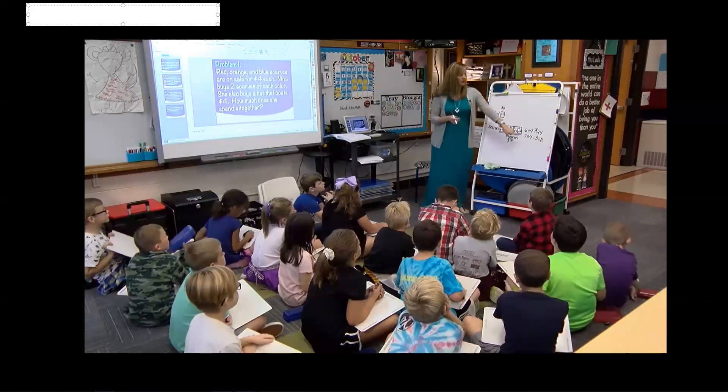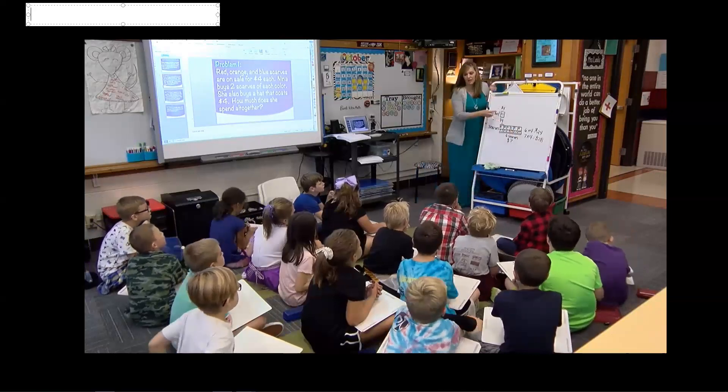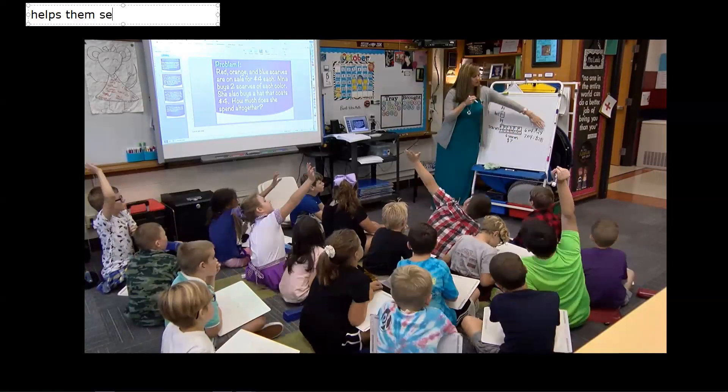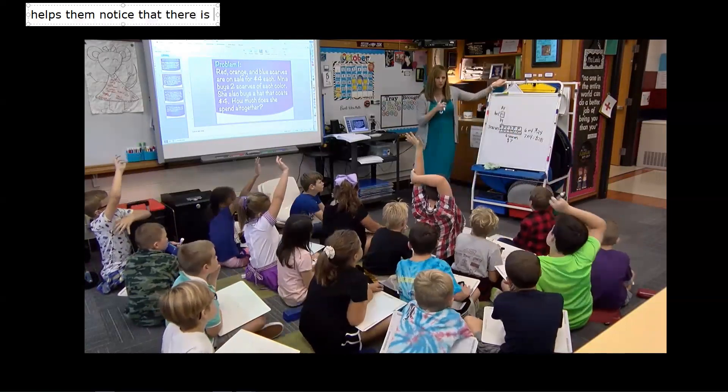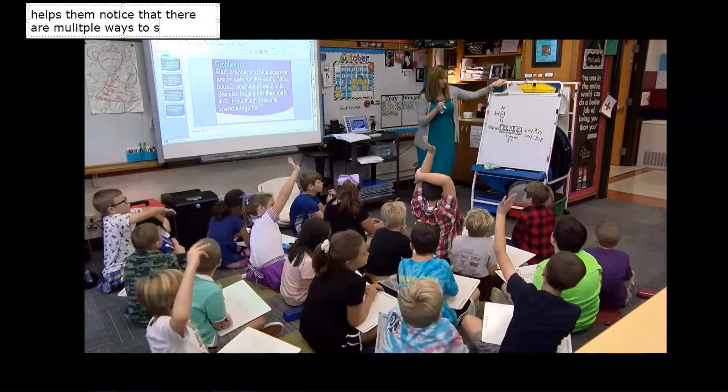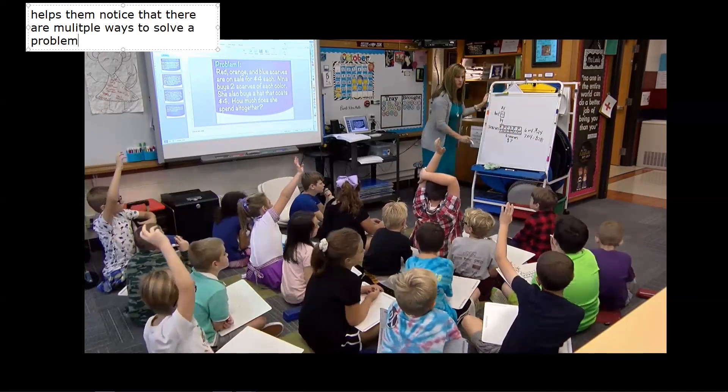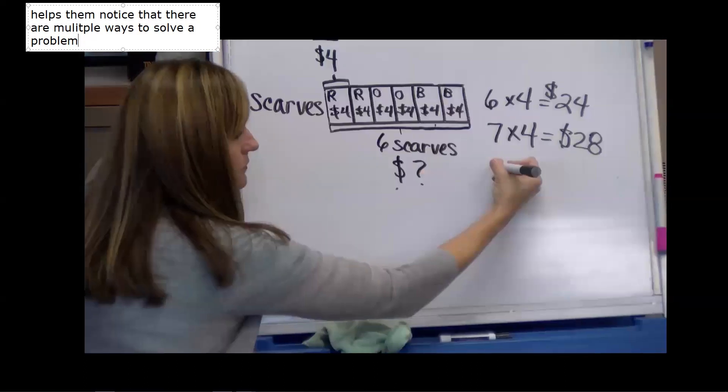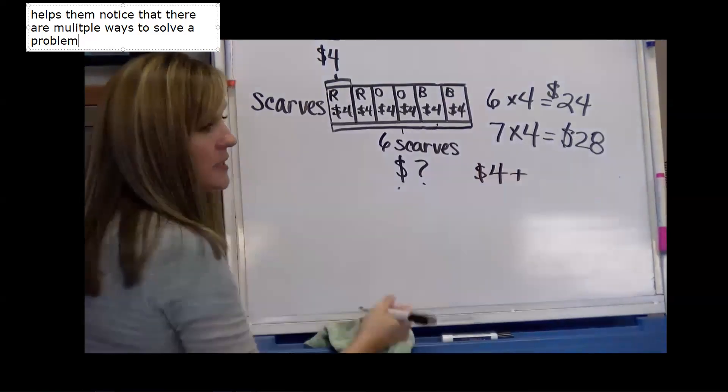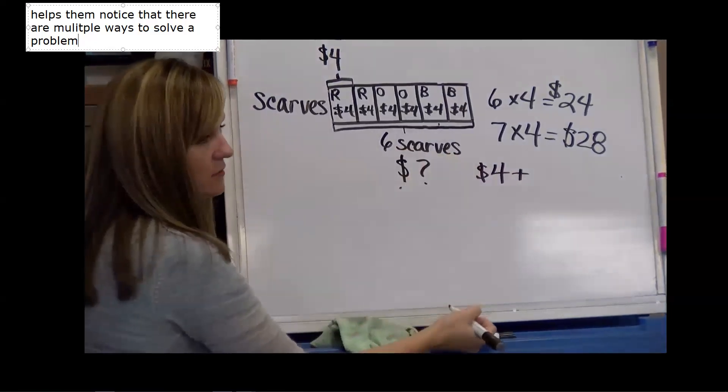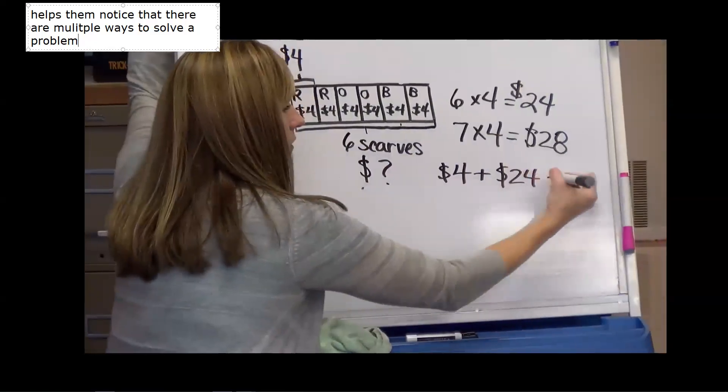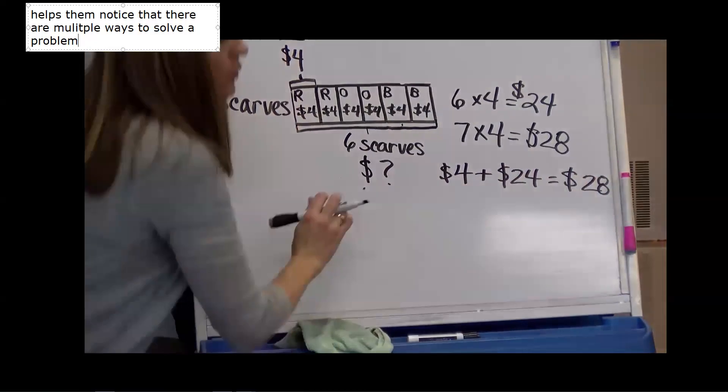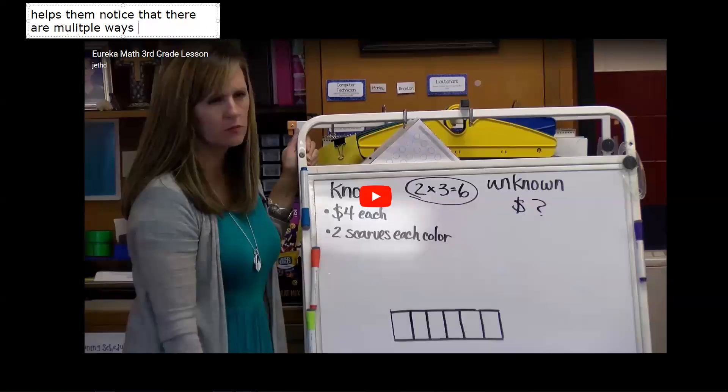Now I have to tell you, most third graders wouldn't recognize that we added another group of four. They would have seen it, but I don't think that's the way they would have solved. Can anyone think of another way we could have solved? If we know that the scarves add up to $24 and a hat costs $4 more, what else could we do, Tristan? We could just add $4 plus $4 plus what was the cost of the scarves? $24. How much is that? Twenty-eight. Twenty-eight. Because we have four ones plus four ones is eight ones. Two tens. Twenty-eight. All right. Thank you.